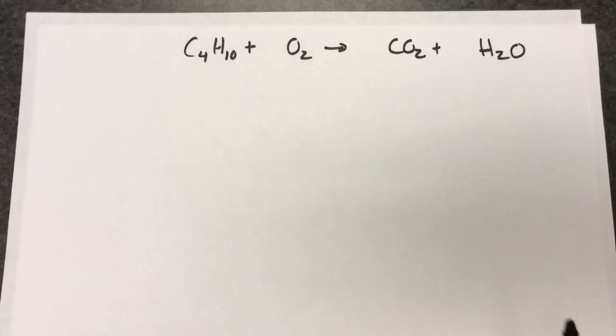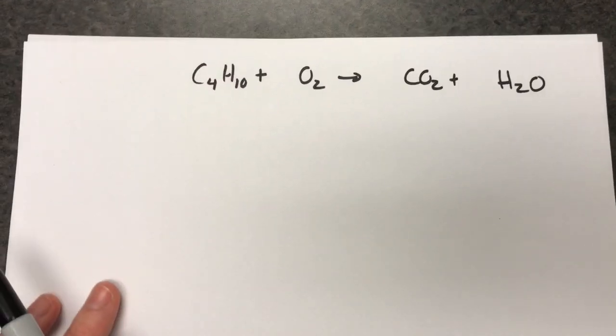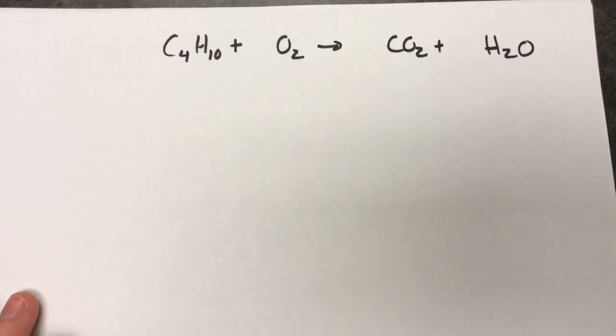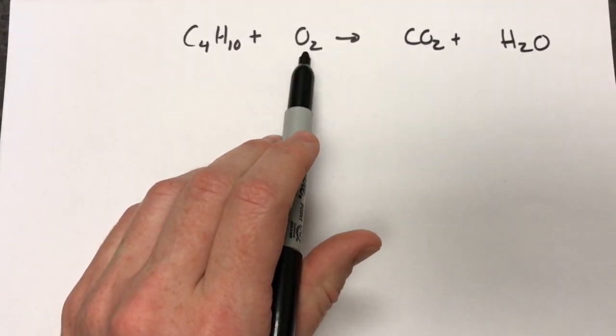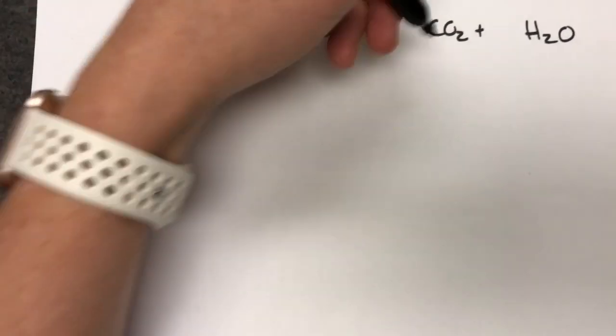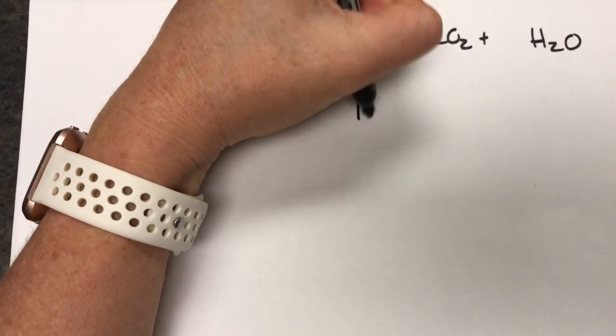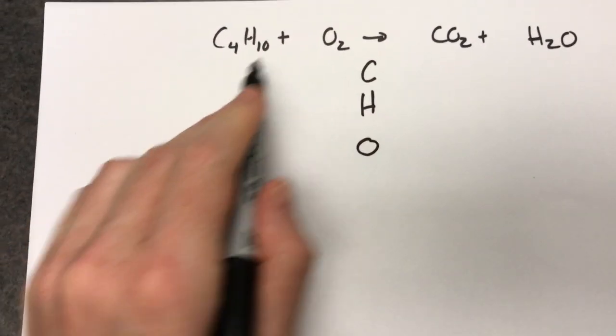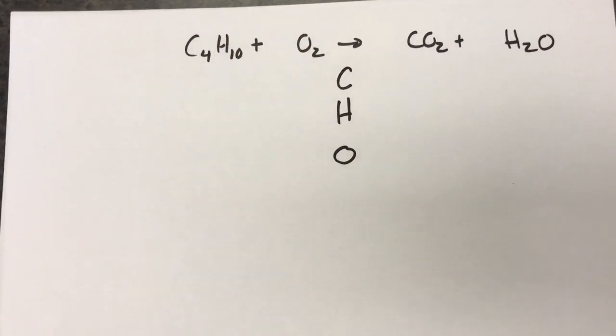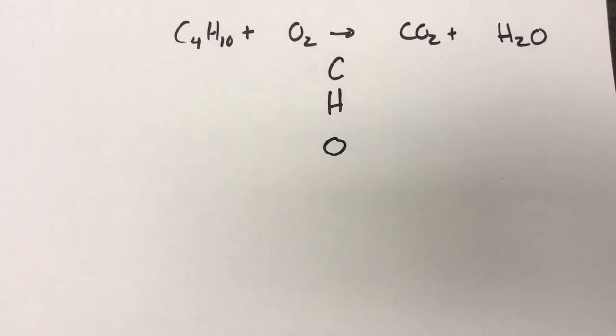Let's do another problem. Up the difficulty a little bit. Here we've got some butane, still a combustion reaction. Oxygen we want to make sure we balance last. Hydrogen and carbon are technically interchangeable because both of them are different on each side. But C-H-O is more fun to say.